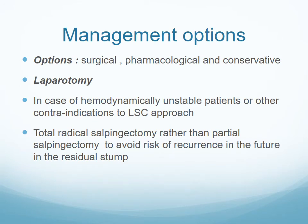Regarding management options, we have three: surgical, pharmacological, and conservative. Surgical options are laparotomy and laparoscopy. In a hemodynamically unstable patient, or those with a contraindication to laparoscopy, we perform a laparotomy. It is recommended to perform radical salpingectomy rather than partial salpingectomy, to avoid recurrence in the residual stump.